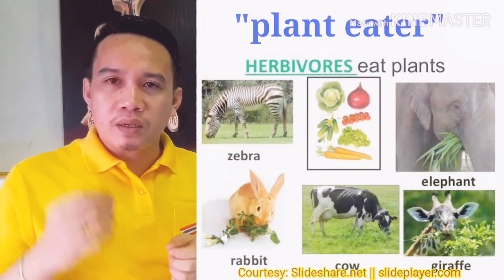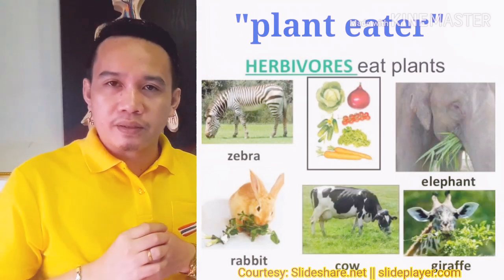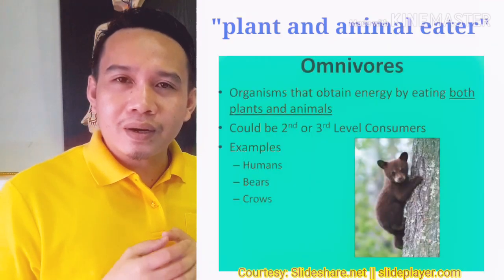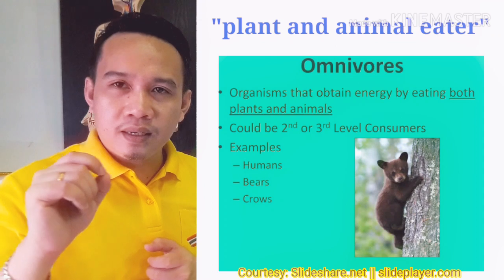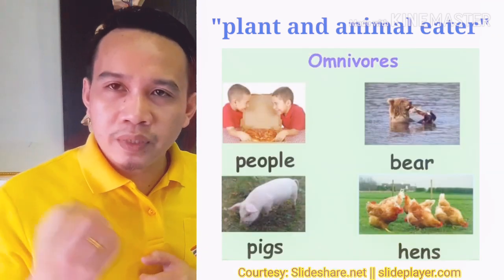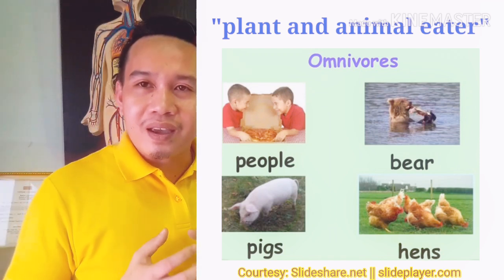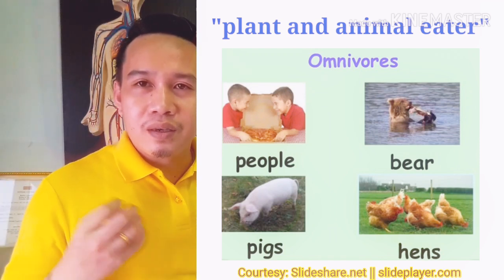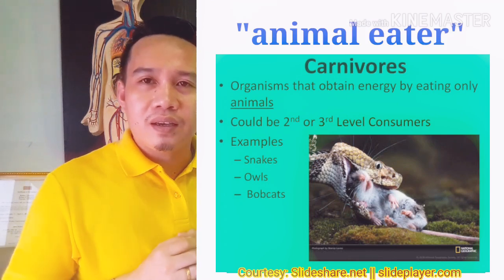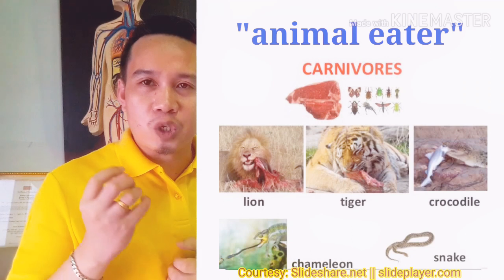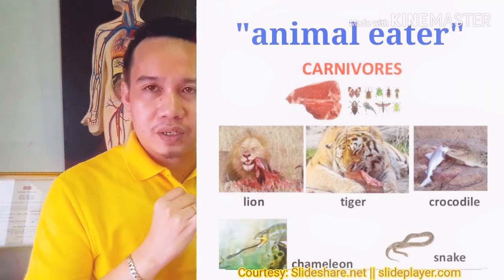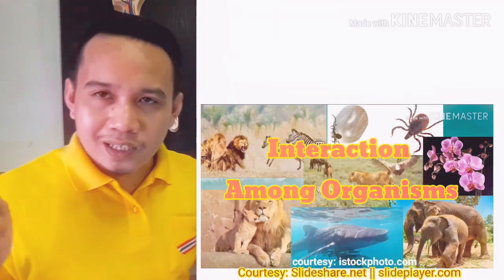There are animals that only eat plants, and they are considered herbivores. There are organisms that eat both plants and animals, and they are called omnivores — humans are an example. There are also organisms that eat only animals, and they are called carnivores.